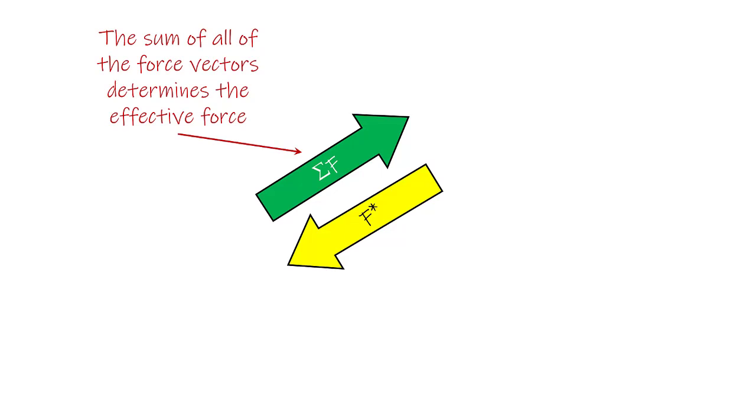Now we have the sum of the force vector, and that sum of the force vector can go in any direction — we call that the effective force. A force equal and opposite in direction to that, regardless of what that direction may be, is our inertial force. So again, the sum of all the force vectors determines the effective force, and an equal and opposite force is called the inertial force.